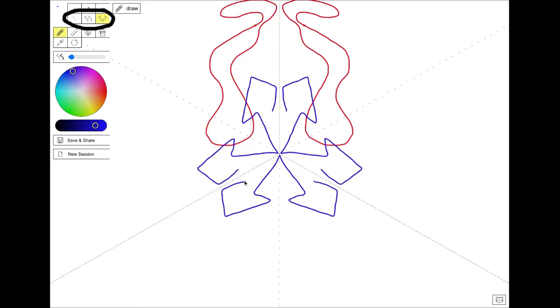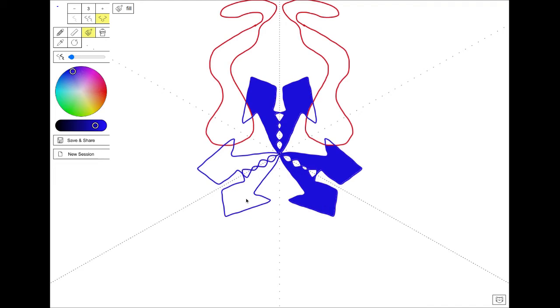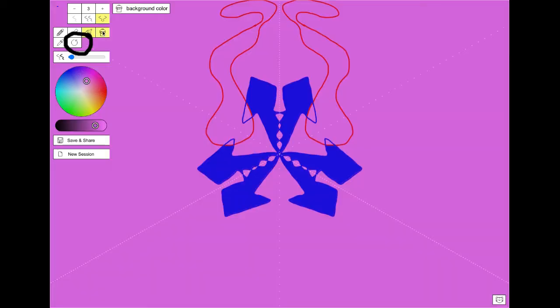These buttons here change whether it has radial symmetry or not. There's a fill button in addition to the regular pencil button. We can change the background color and the thickness of the pen. Oh and this is my favorite button. I use it all the time, the undo button.